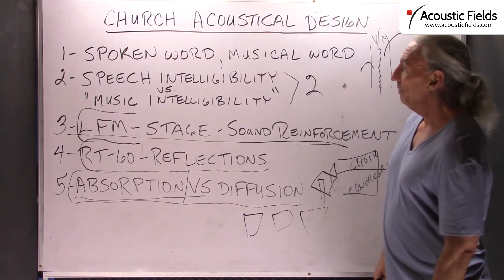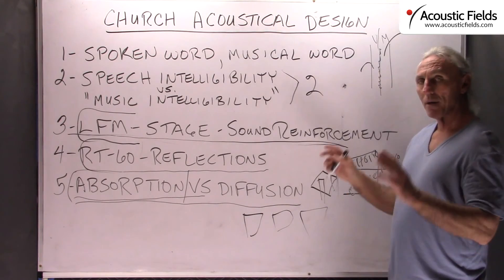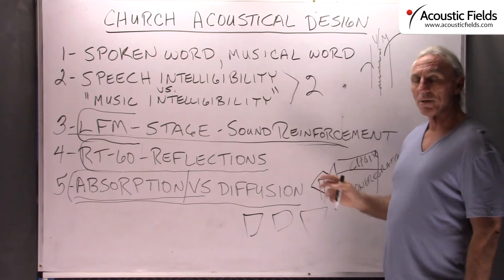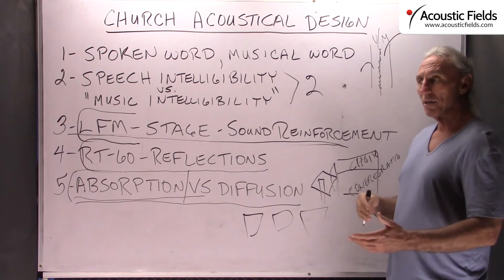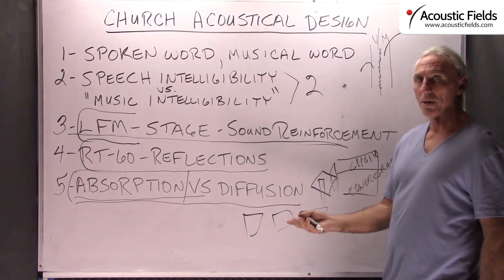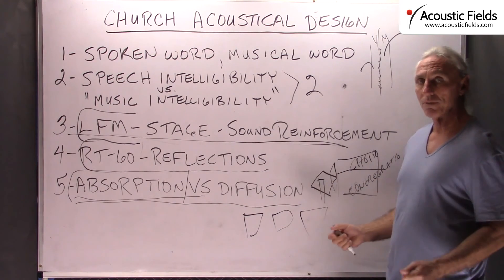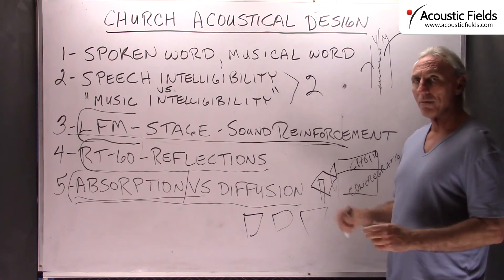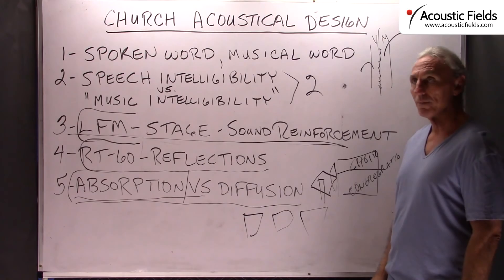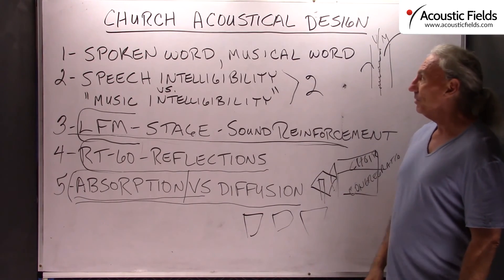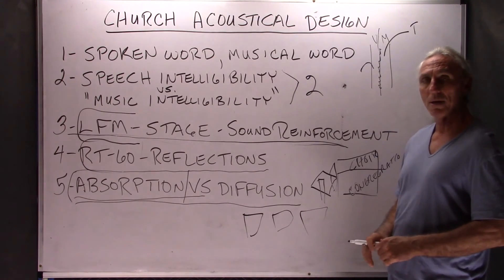There are a lot of variables we can work with to get you what you need. The intelligibility issue and RT60 time management always require surface treatment — you need to cover so much surface area with a sufficient rate and level of absorption to achieve a particular RT60 time. So you're going to have to give up some surface area in the church to manage the issues so that the spoken and the musical word can be heard. That's our church acoustical design in summary — let us know if we can assist you. Thank you.